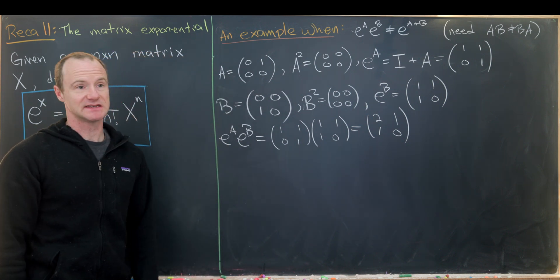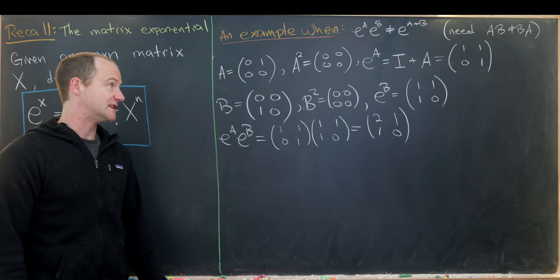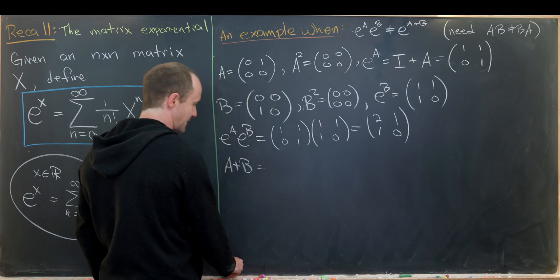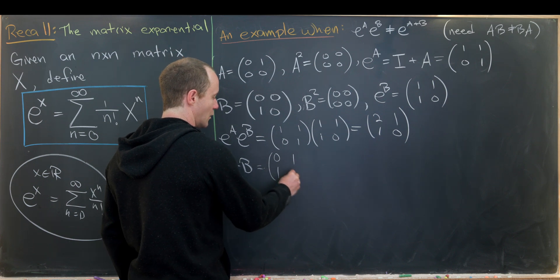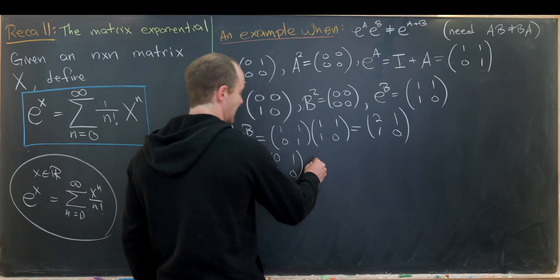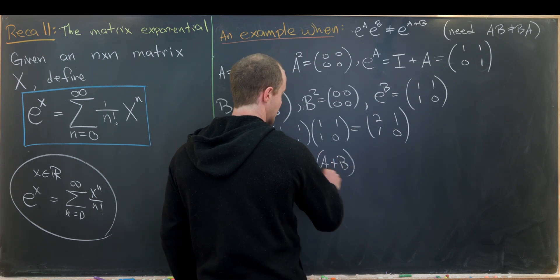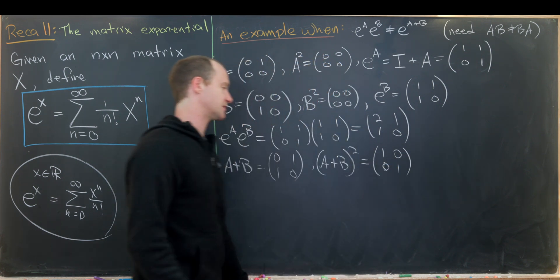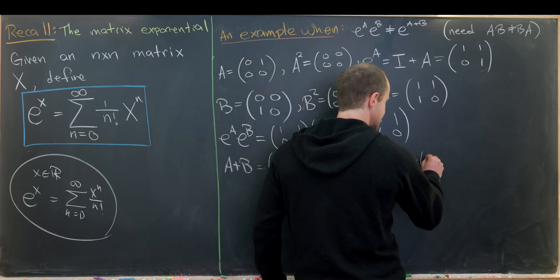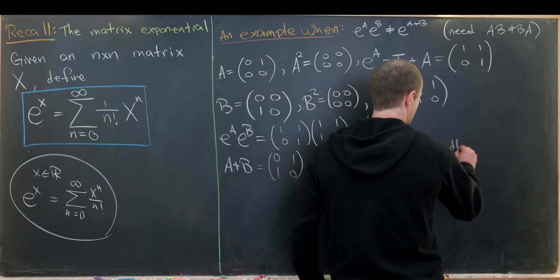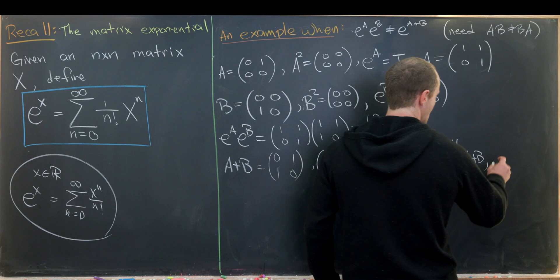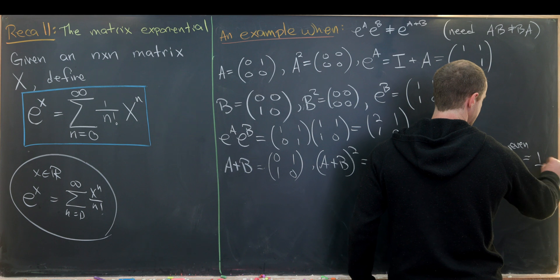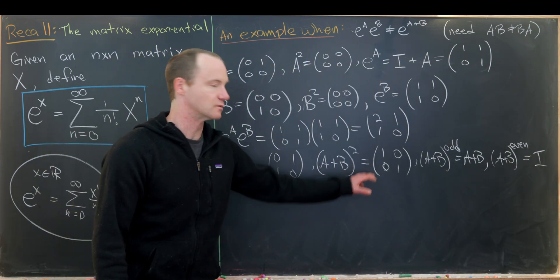Now let's explore e to the A plus B. We need to look at the matrix A plus B and its powers. So A plus B is [0,1; 1,0]. Notice that (A plus B) squared is in fact the identity matrix, which is easy to check by matrix multiplication. That means A plus B to an odd power always equals A plus B, whereas A plus B to an even power always equals the identity matrix.